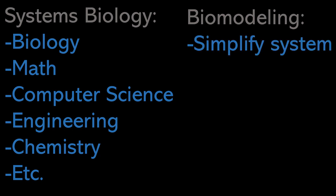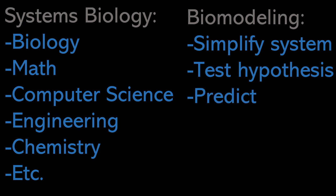Biomodels are generally simplified versions of the system, and they allow us to test specific hypotheses, which will ultimately also allow us to make predictions that go beyond our current understanding so that we can gain some new insight and direct our experimental work.